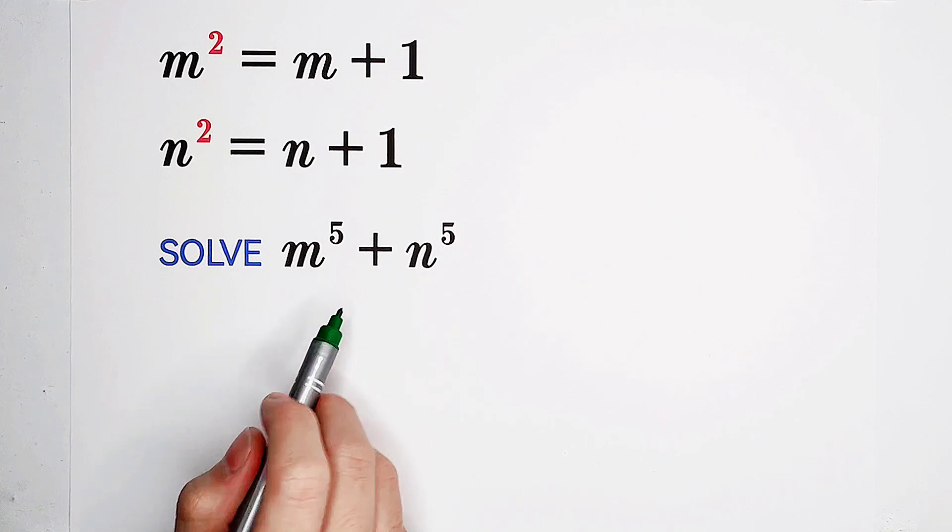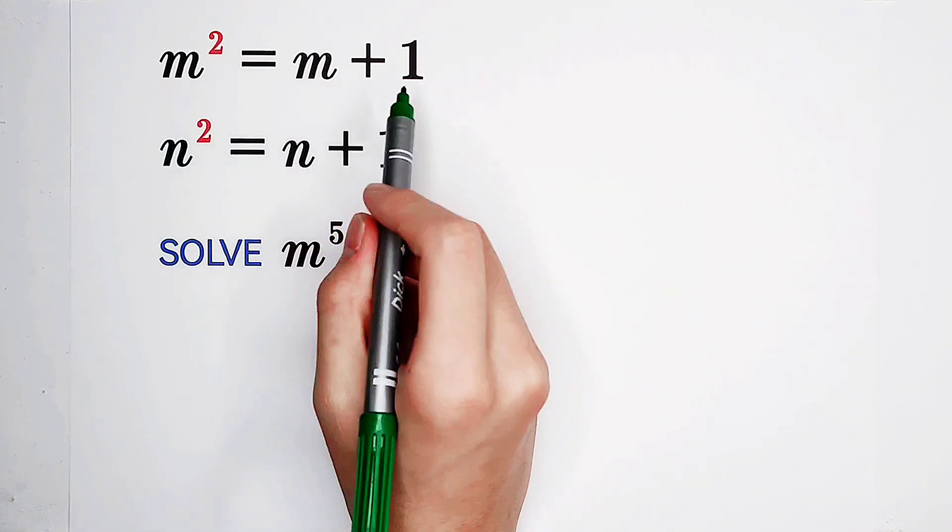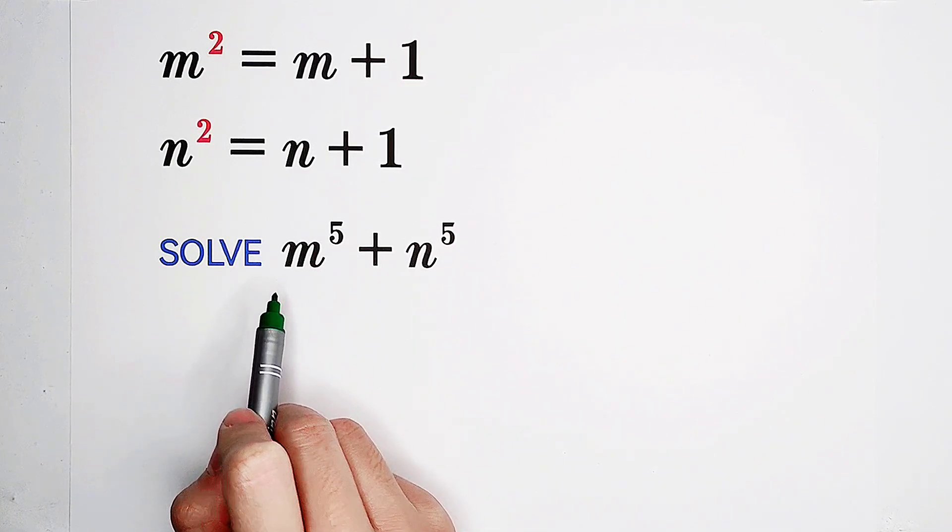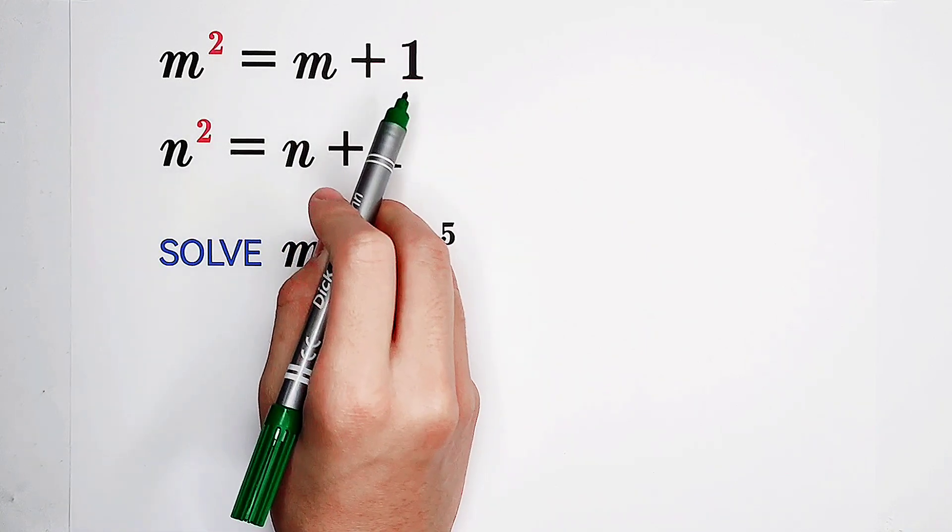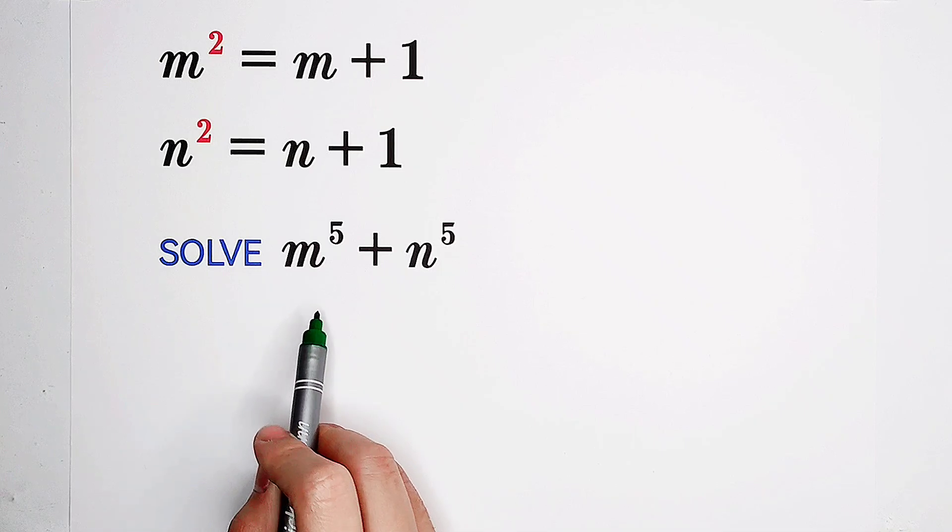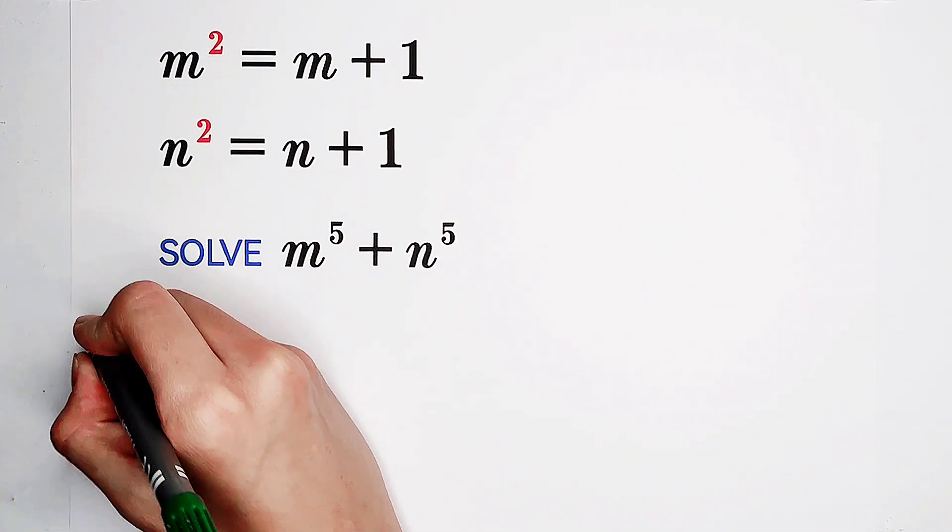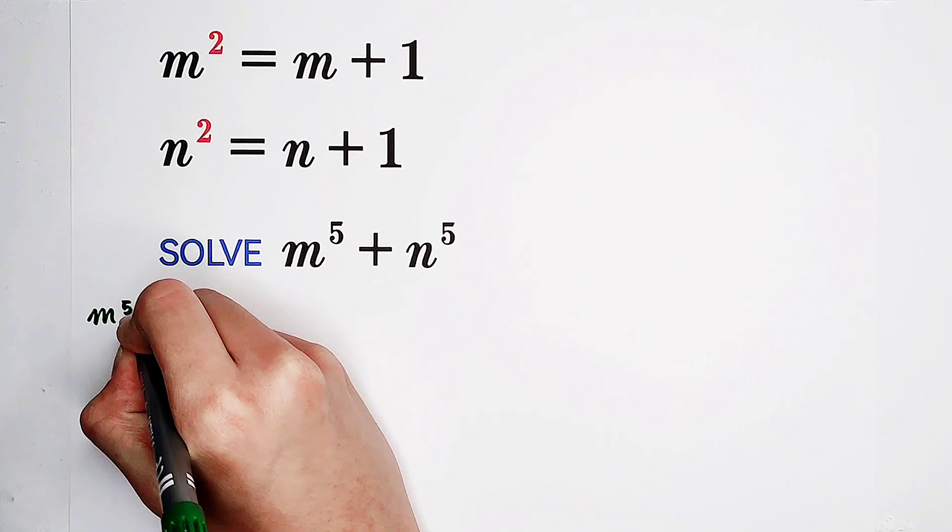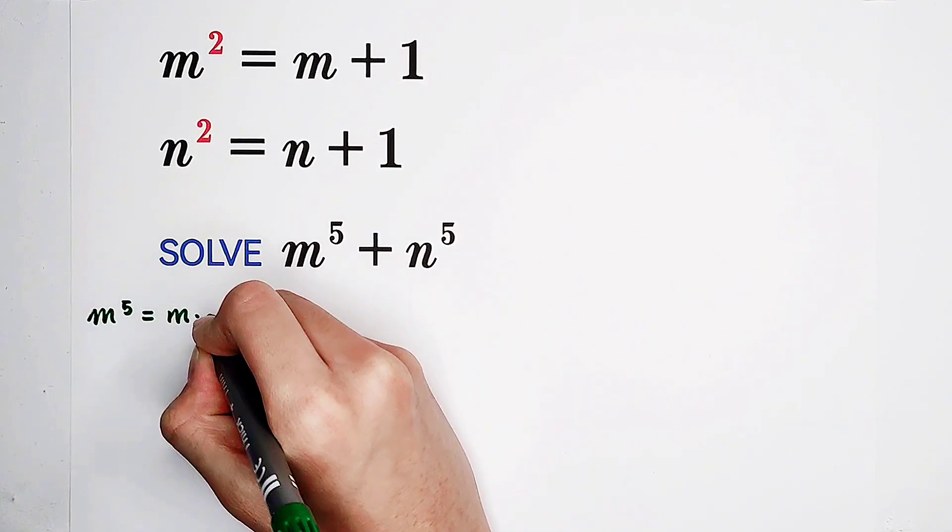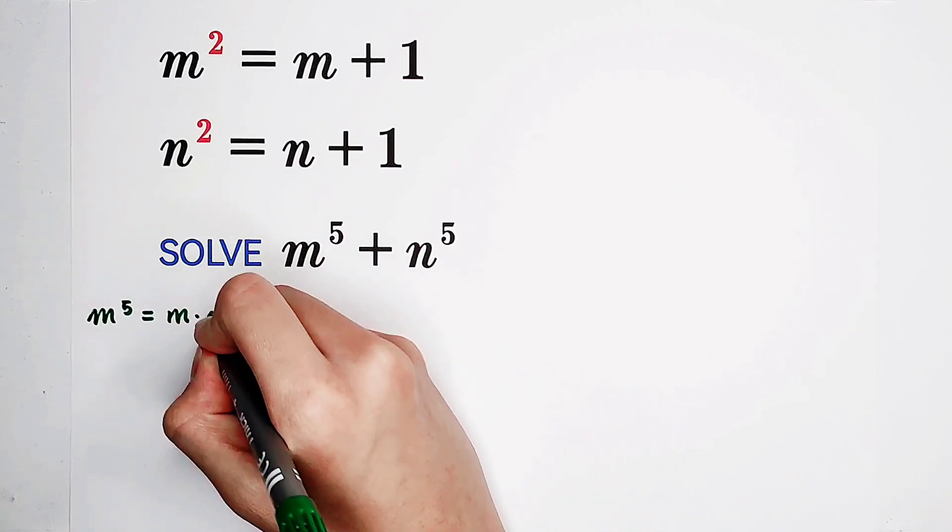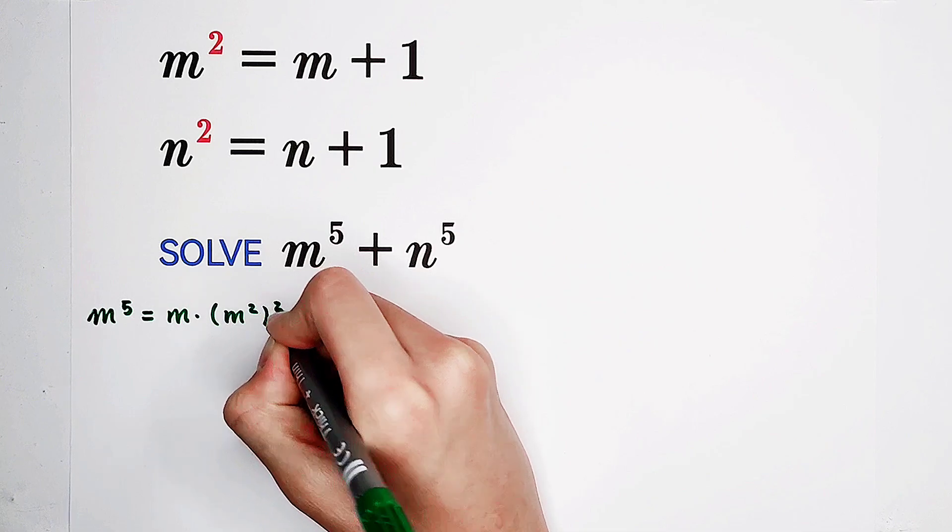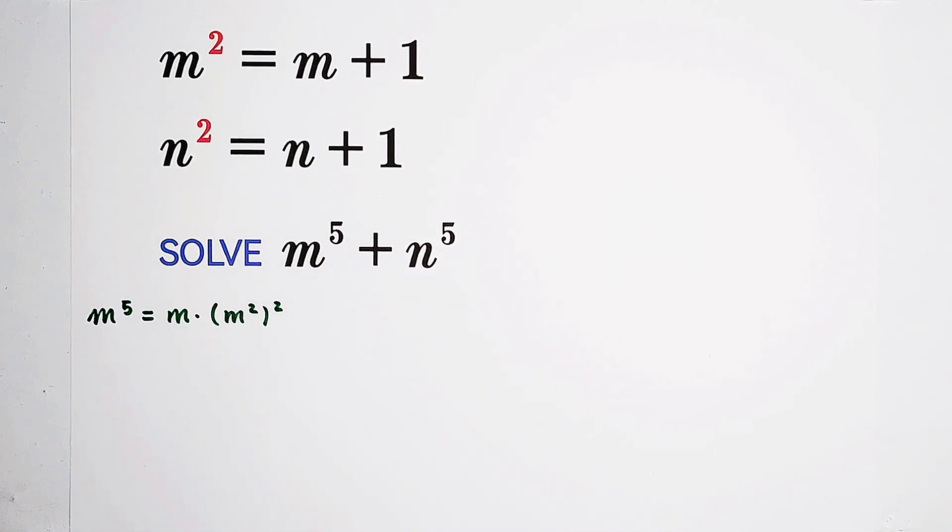So what shall we do? Of course, we have m squared equals m plus 1, and here m to the power 5. So now, how can I use m squared equals m plus 1 to express m to the power 5? Look, m to the power 5 can be written as m times m to the power 4. And m to the power 4 can be written as m squared squared.